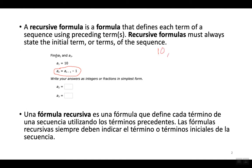They want you to find the second and the third term in the sequence. That's what that little 2 and the little 3 represent. So A1 is the first term in the sequence; they want you to find the second and the third term using this recursive formula. When I'm looking for the second term, I substitute the number 2 where N is.